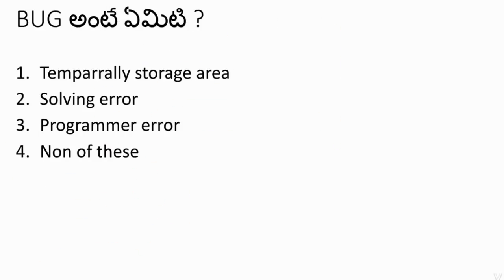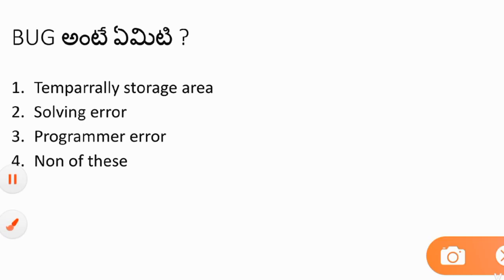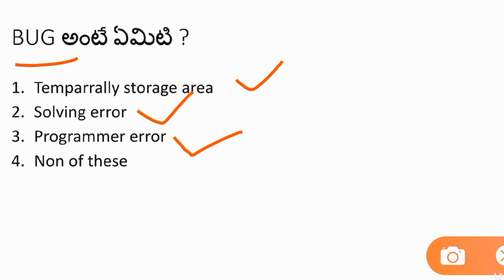Next question about bugs and related terms. Options include: temporarily storage area, solving error, programming error, and none of these. Bug means a programming error. Buffer is a temporary storage area. Debug means solving or fixing an error — debug is the opposite of bug.